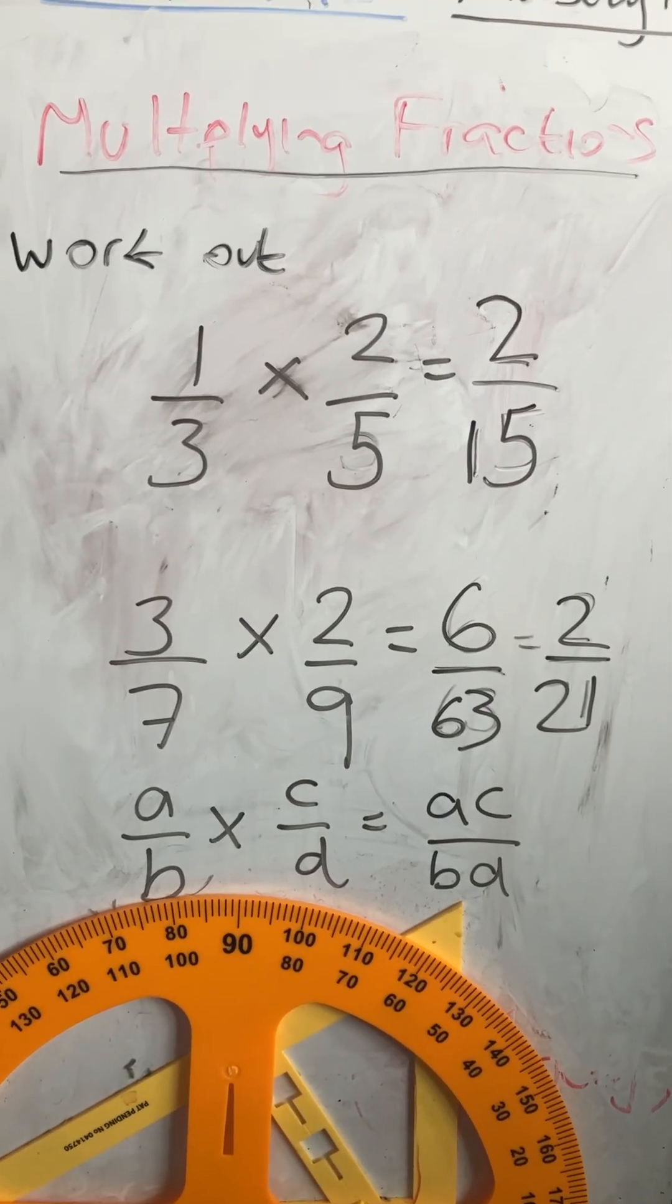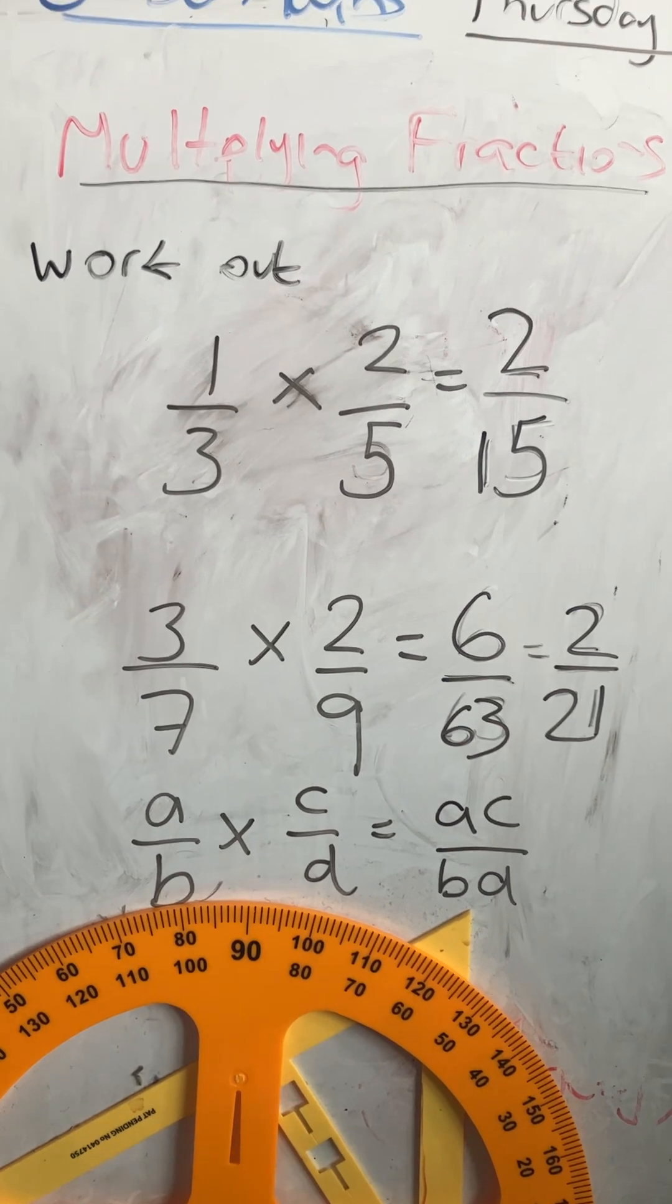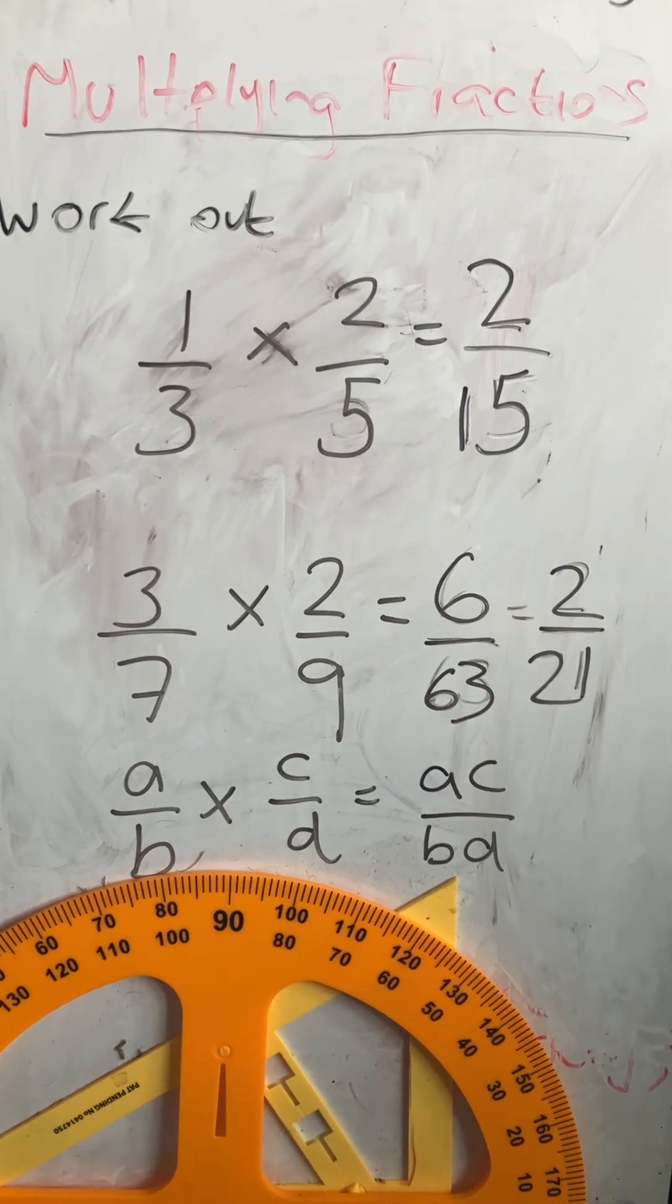Just to summarize, when you multiply fractions, you multiply the numerators together and you multiply the denominators together, and you simplify where possible.